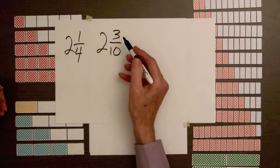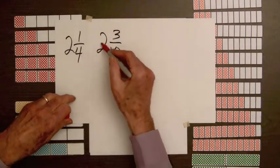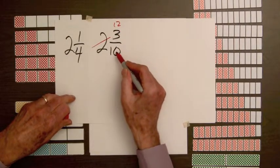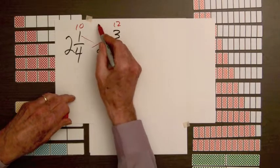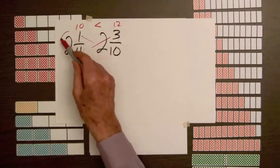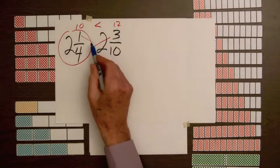And we can use the test we just developed. 4 times 3 is 12, 1 times 10 is 10. 10 is less than 12, so this mixing number is less than the mixing number on the right. 2 1 4th is less than 2 3 10ths.